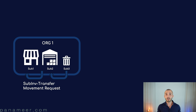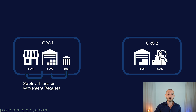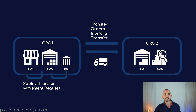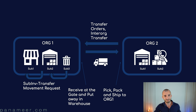Most companies will have more than one inventory organization, so let's add another one here. Now that we have two inventory organizations we need a way to transfer goods between them, and that's the second group. In Oracle we have two main kinds of transactions for this: first, transfer orders, and second, inter-organization transfers. Depending on how they're set up, they usually involve shipment and receiving.